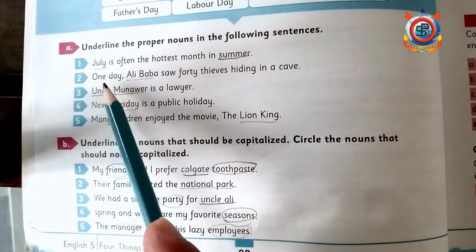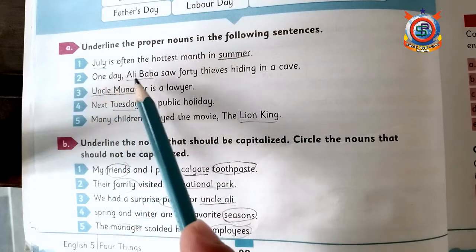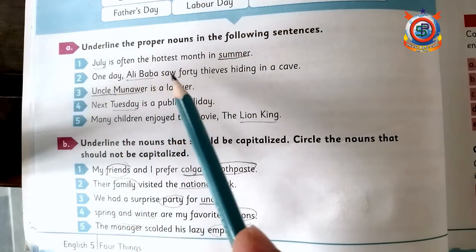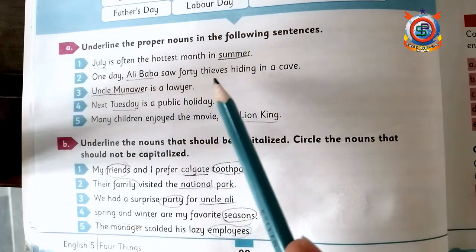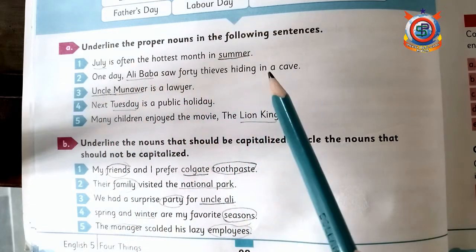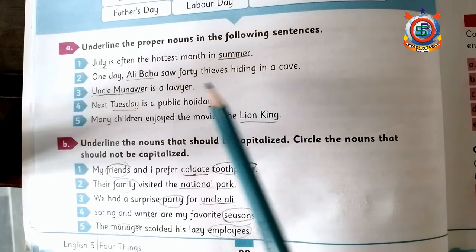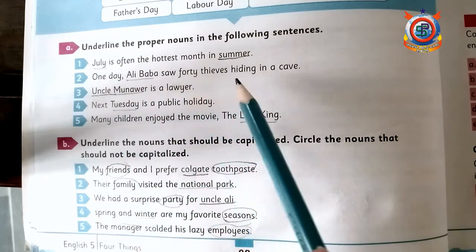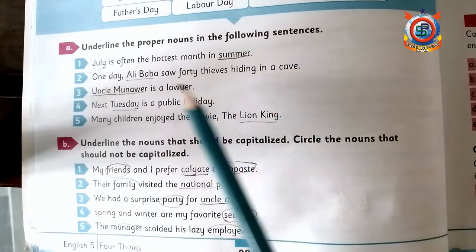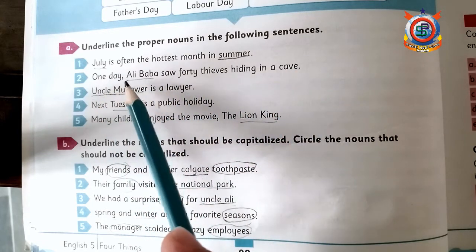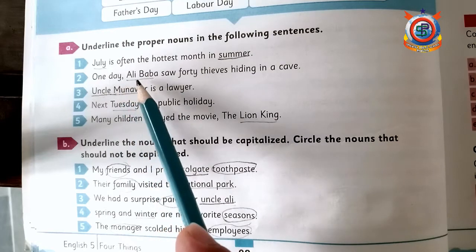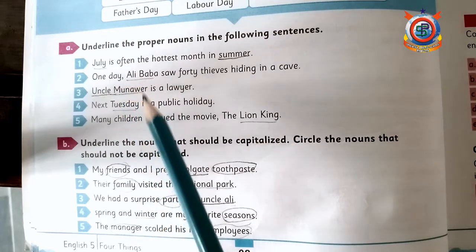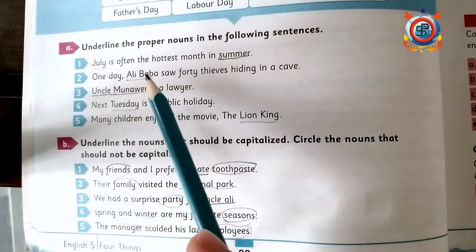Next sentence: 'One day Ali Baba saw 40 thieves hiding in a cave.' Here Ali Baba is a proper noun.